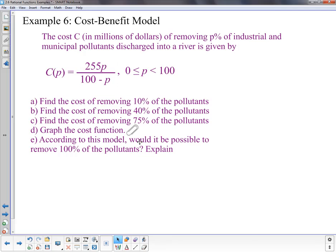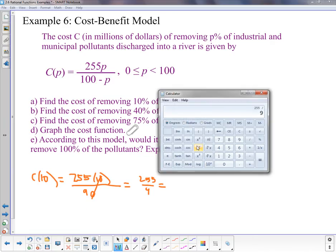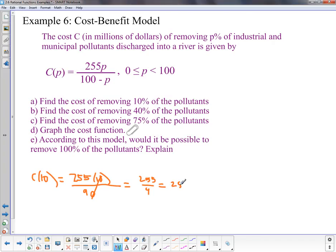Find the cost of removing 10% of the pollutants. So I have 10% of the pollutants. That's p is 10. So I can plug in the equation. C of 10 equals 255 times 10 over 90. Did that math in my head for you. The tens are going to cross. So this is really 255 over 9. 255 divided by 9. We'll actually calculate what that is as a decimal cost in dollars. It's going to be $28.3 million. That's part A.